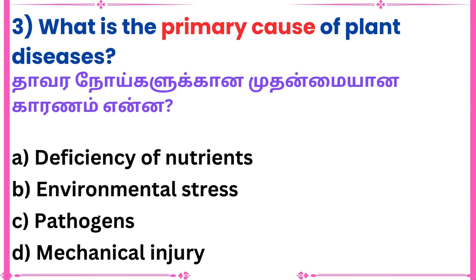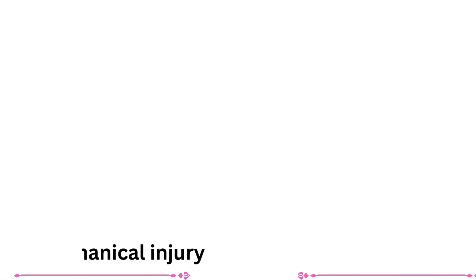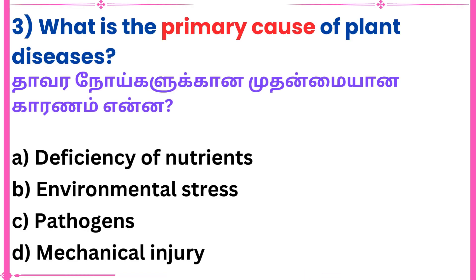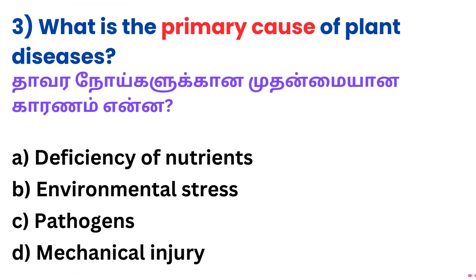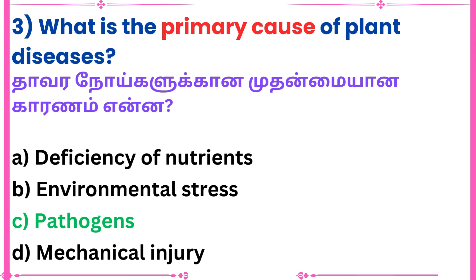Third question: What is the primary cause of plant diseases? Answer: Pathogens.